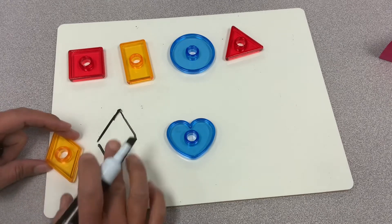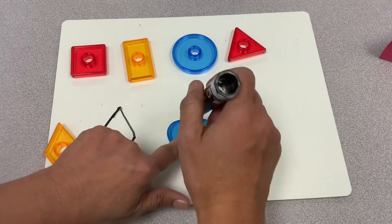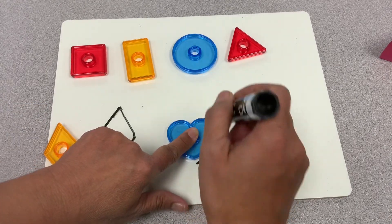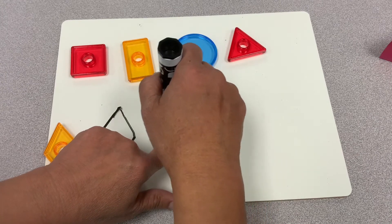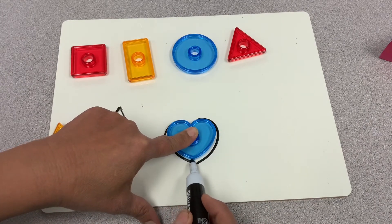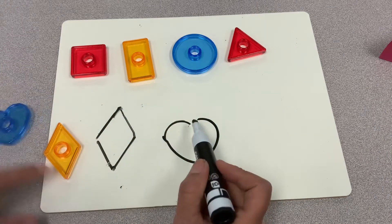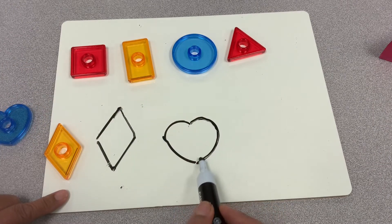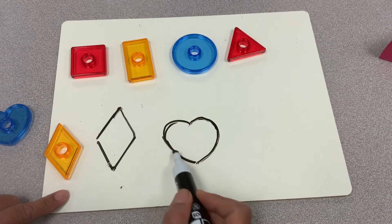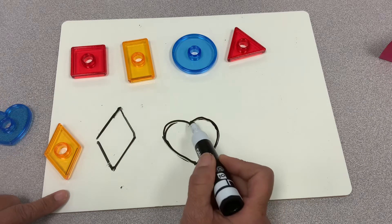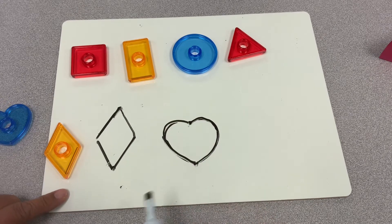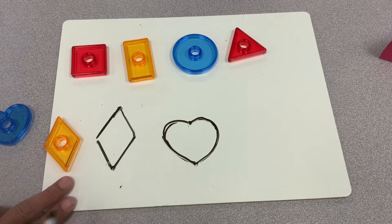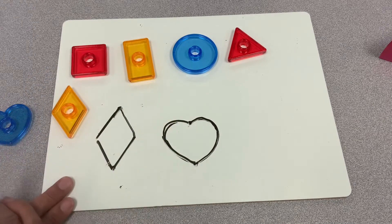So that is a diamond, and this is a heart. It goes this way, it curves out, curves out this way too. So it has two curvy lines. One goes this way, and one goes the opposite way, and they meet at the top and at the bottom. That's a heart.